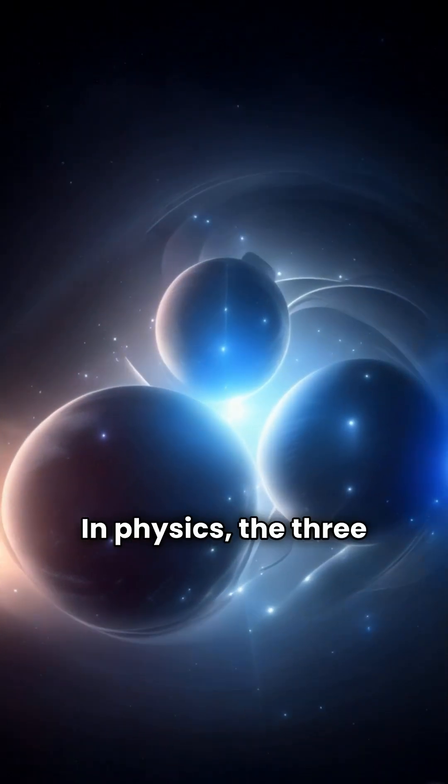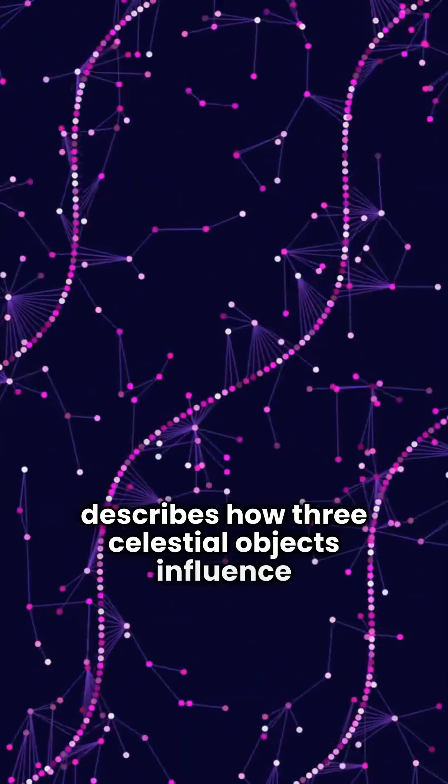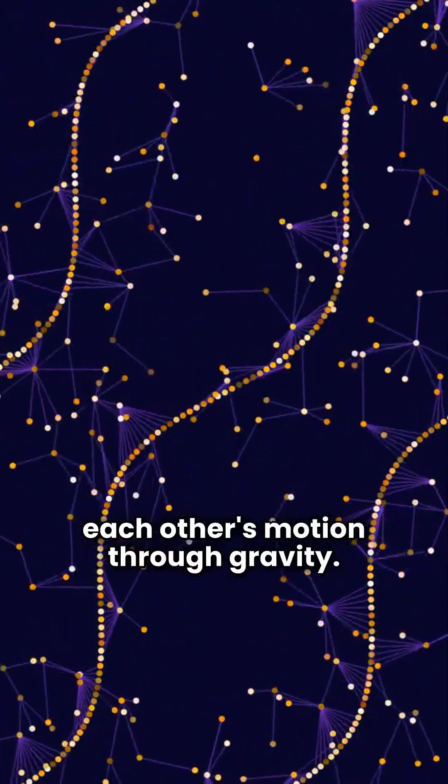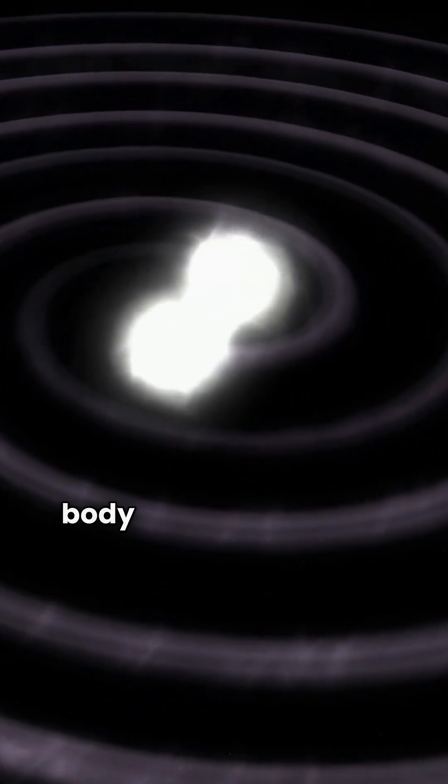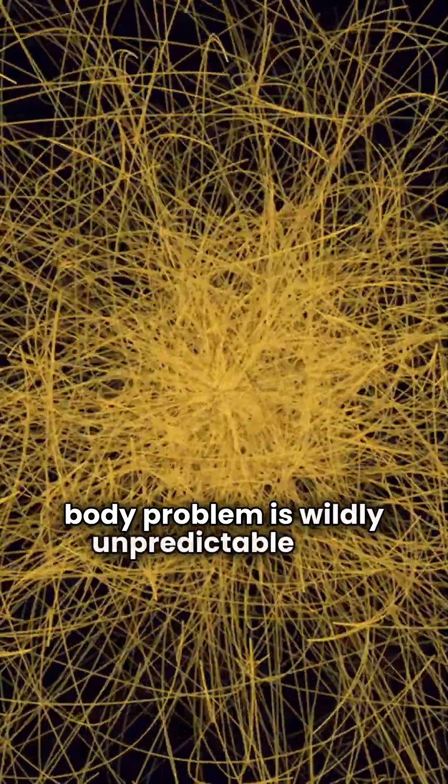In physics, the three-body problem describes how three celestial objects influence each other's motion through gravity. Unlike the predictable two-body system, the three-body problem is wildly unpredictable and complex.